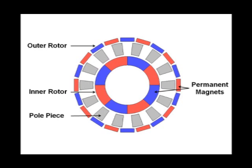Usually, the pole pieces are stationary. For some applications such as variable transmission, all three parts rotate at different speeds.